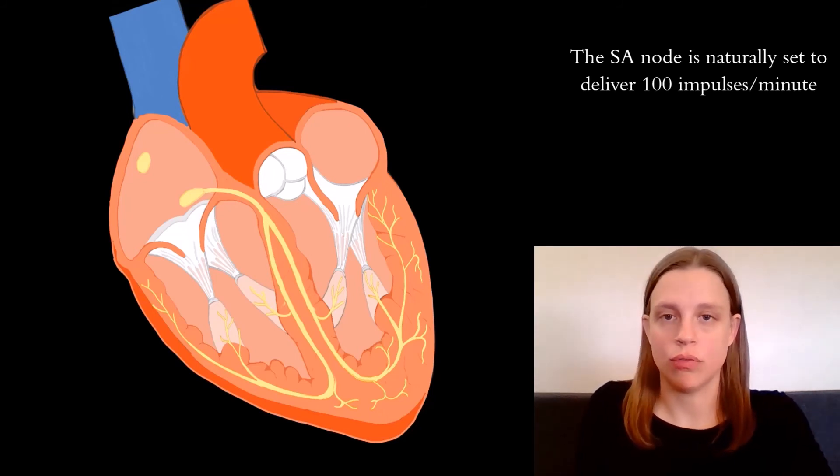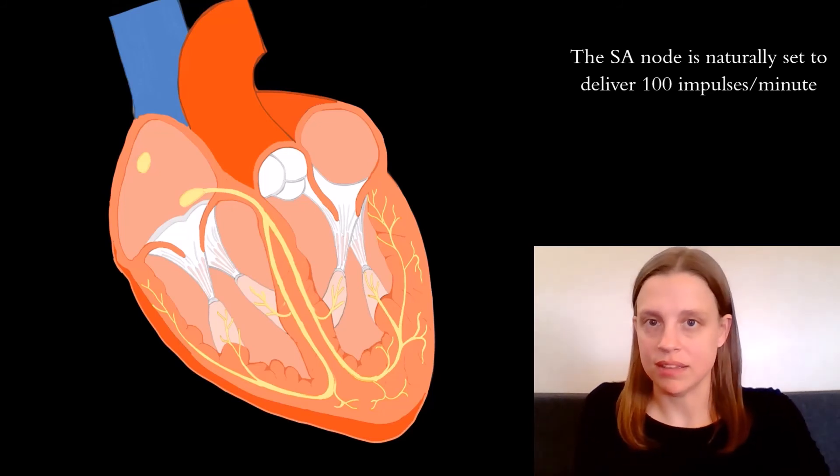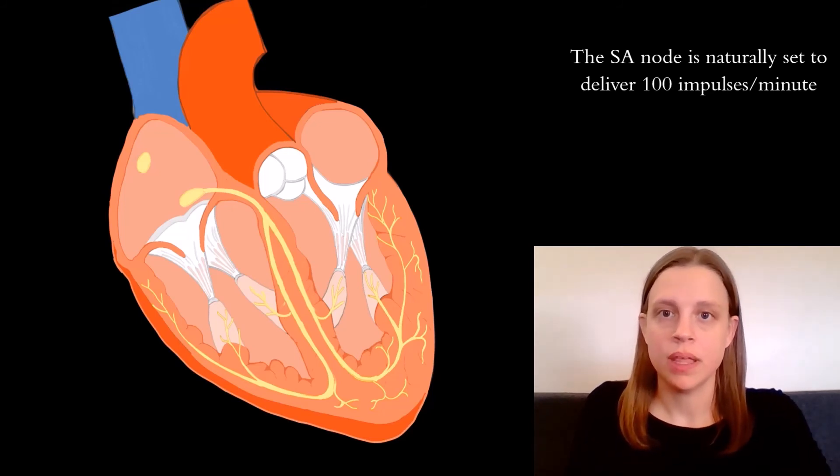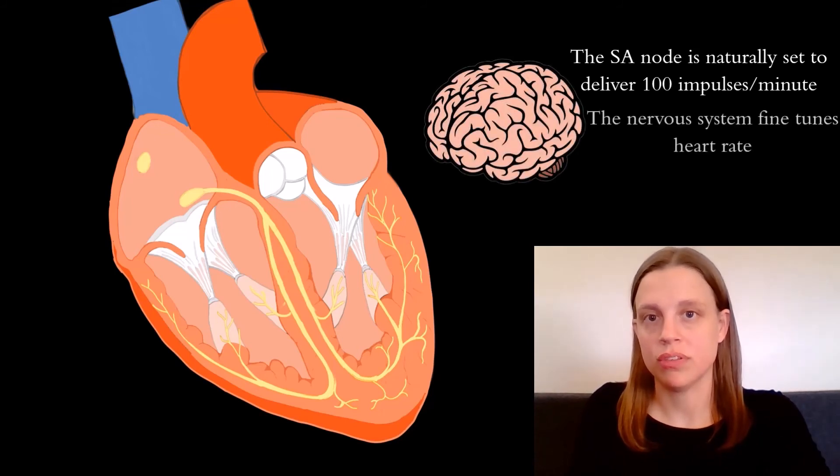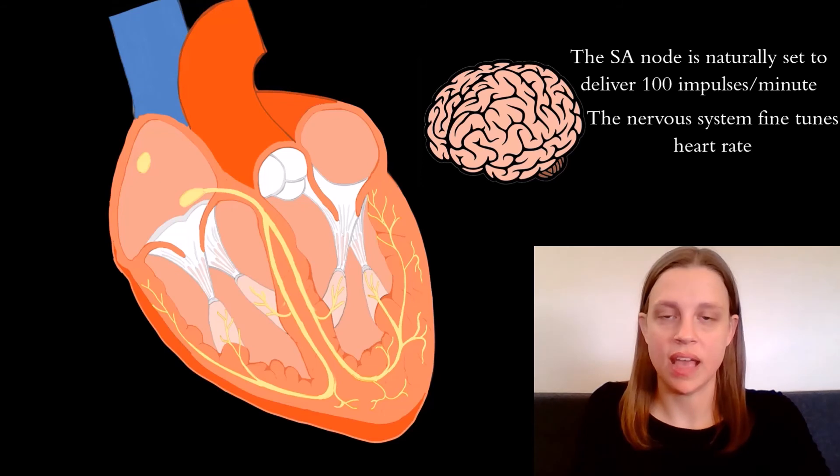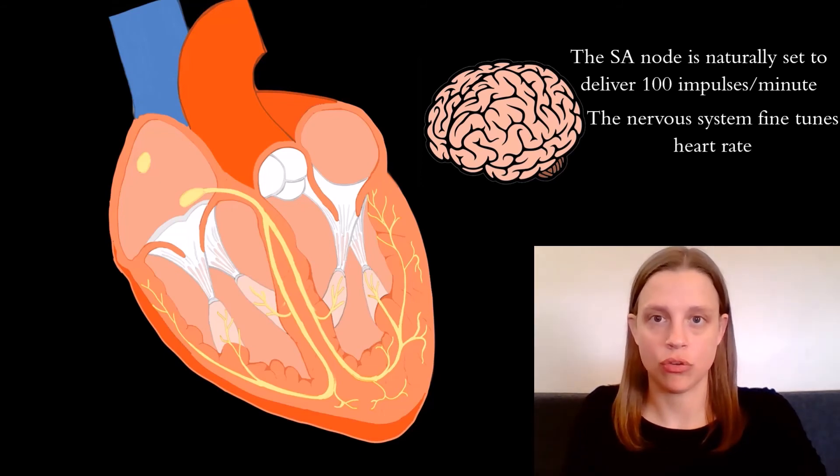But the reason that your resting heart rate isn't 100 beats per minute is because the brain fine-tunes how fast or how slow the SA node generates electrical impulses.